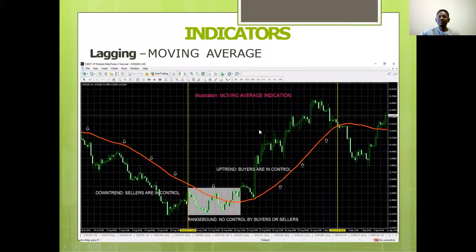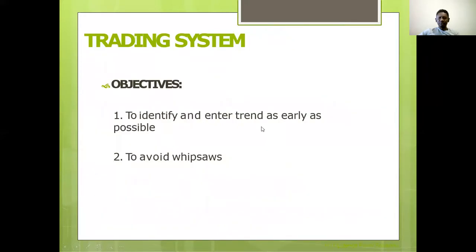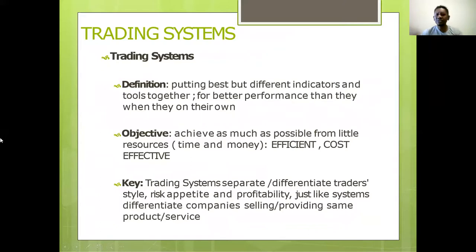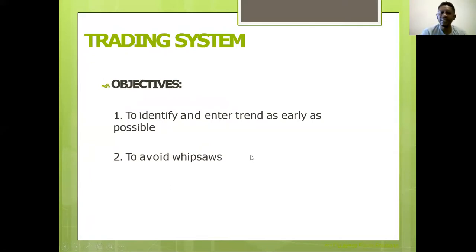Next, let's talk about moving averages and the trading system. A trading system is something that will help you identify trends — not candlesticks. A trading system needs to get you trends as early as possible, and it must help you avoid false breakouts.